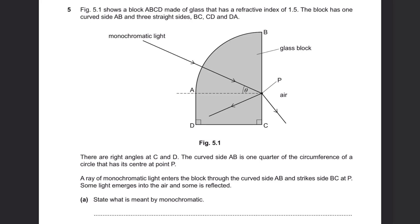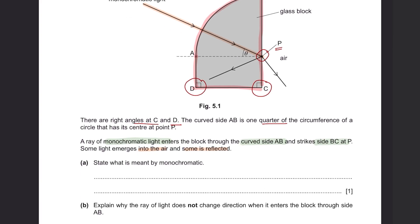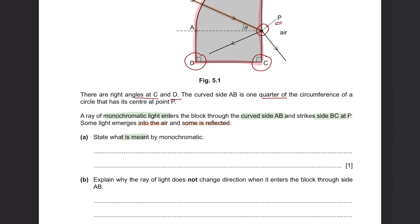Question 5: Figure 5.1 shows a block ABCD made of glass with a refractive index of 1.5. The block has one curved side AB and three straight sides BC, CD, and DA, with right angles at C and D. The curved side AB is one quarter of the circumference of a circle with its center at point B. A ray of monochromatic light enters the block through the curved side AB and strikes side BC at P; some light emerges into the air and some is reflected. Question A: State what is meant by monochromatic. Monochromatic refers to a light source or beam consisting of a single color or wavelength — light waves that have the same frequency.